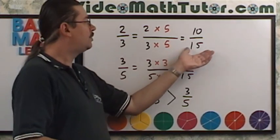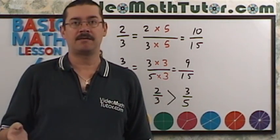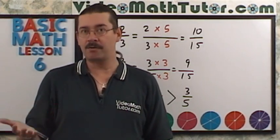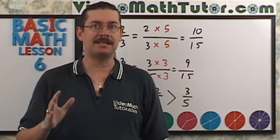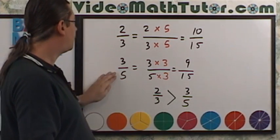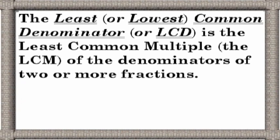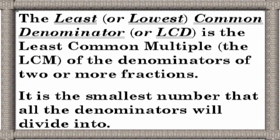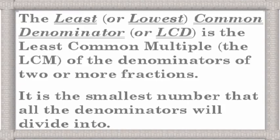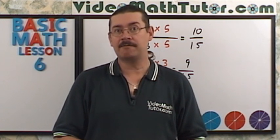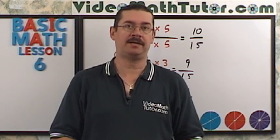Now, I don't have to use just 15. Any multiple that is common for 5 and 3 would work — 15, 30, 45, and so on. But for simplicity, you want to find the smallest multiple that has both in common. The least or lowest common denominator, or LCD, is the least common multiple — the LCM — of the denominators of two or more fractions. It is the smallest number that all the denominators will divide into.